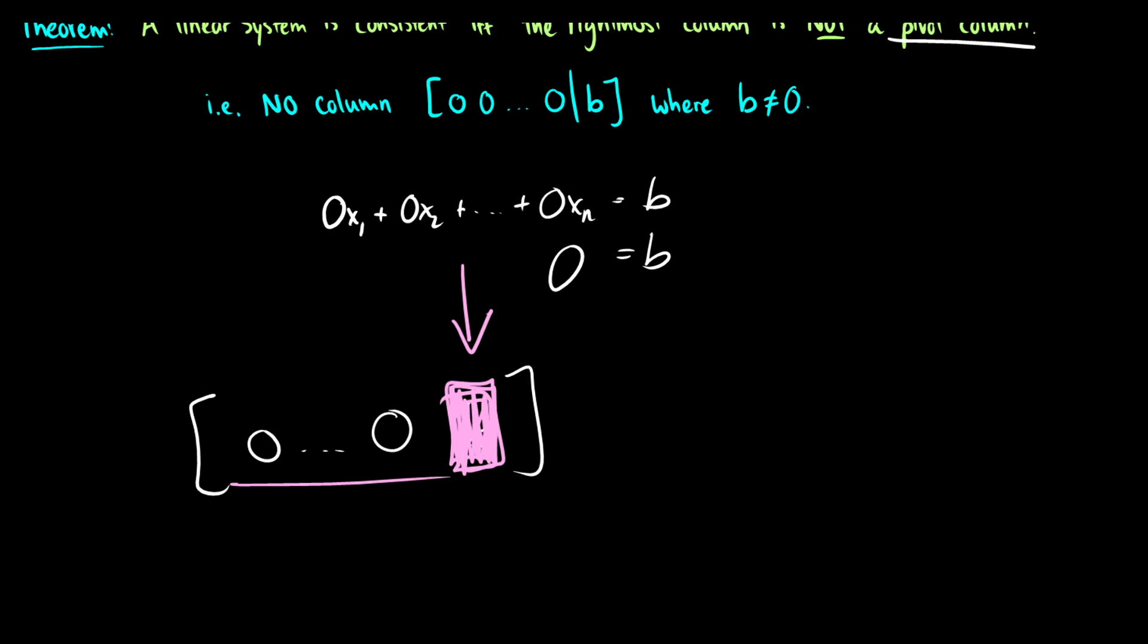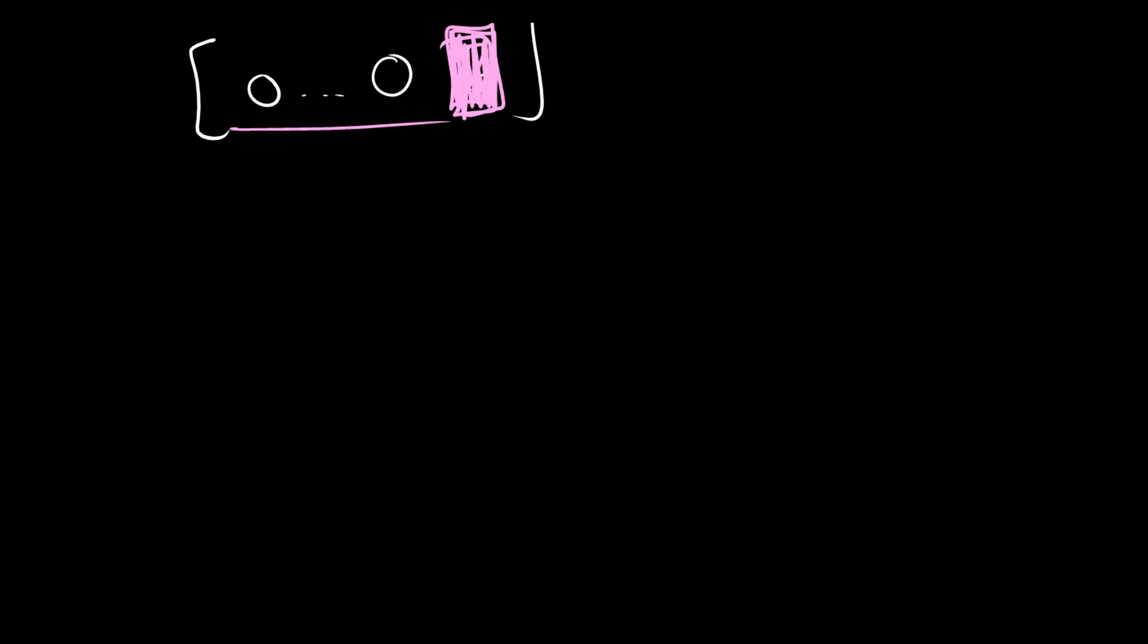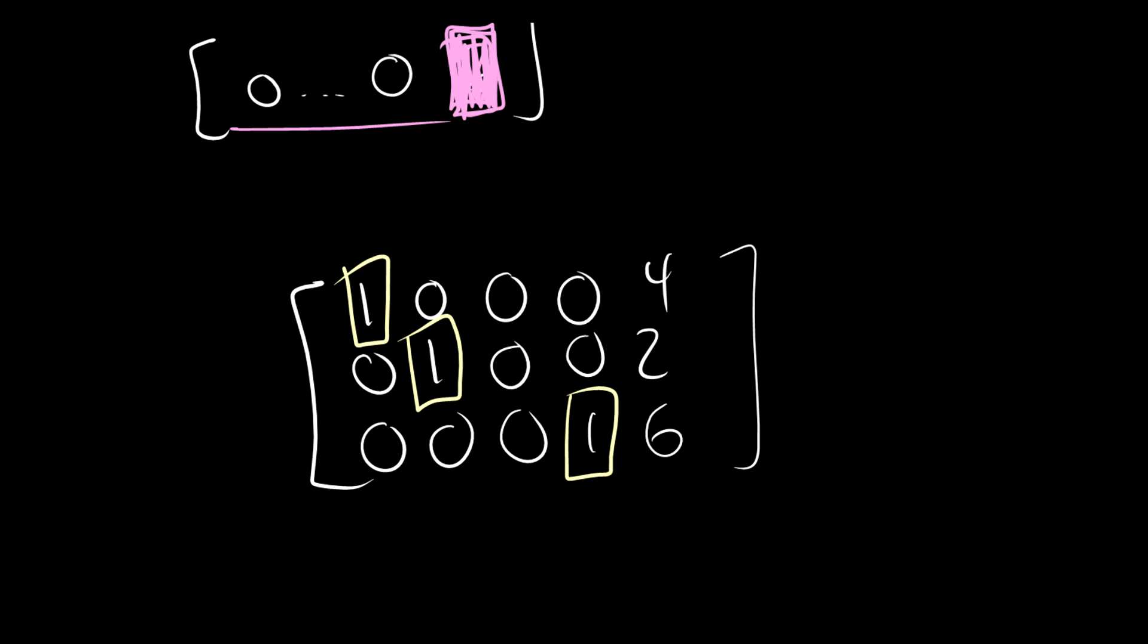So as an example, suppose I have a matrix that looks like this. 0, 0, 0, 1, 6. And I ask you, which are the pivot columns? Well, there's a pivot position here, a pivot position here, and a pivot position here. So that means that these three rows are pivot columns because they have a pivot position.